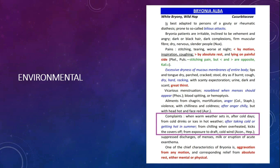Example of environmental cause: you can see a violet color box marked in Bryonia Album. Complaints: warm weather sets in after cold age; from cold drinks or ice in hot weather; after taking cold or getting hot in summer; from chilling when overheated — kicks the covers off; from exposure to draught cold wind. Also present in Aconite and Hypericum.